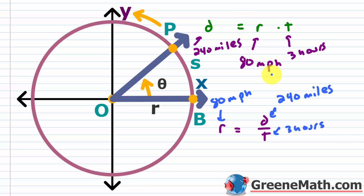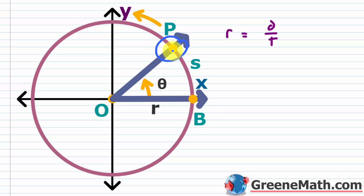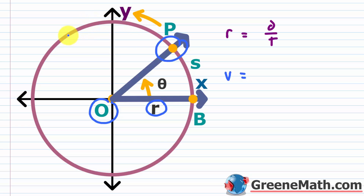Think about calculating travel times on a road trip — that's this formula in action. Now let's relate this to linear speed. Suppose a point P moves at a constant speed along a circle with radius r and center O. The measure of how fast the position of P is changing is known as the linear speed. Instead of r we use v for velocity, and instead of d we use s for arc length, giving us v equals s over t.